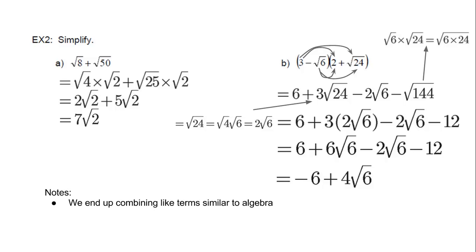A couple notes. We end up combining like terms just like algebra. We do this to keep numbers in exact values. By exact, I don't mean rounded decimal places. Exact is in mixed radical form.